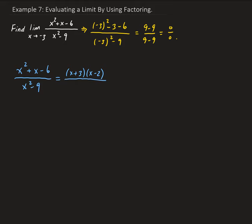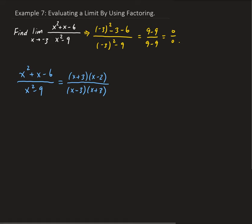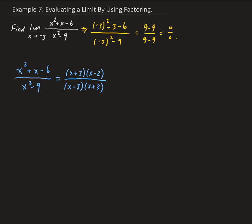And then on the denominator, we have a difference of two squares. So this can be factored as x minus 3 times x plus 3. So from here, we can cancel out the x plus 3. And this will give us x minus 2, all divided by x minus 3.